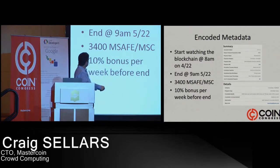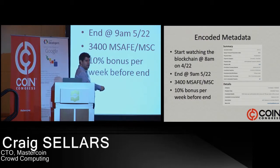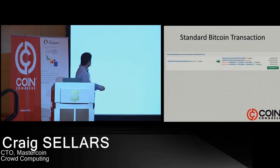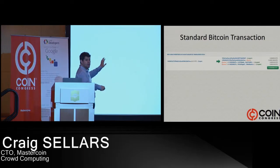What you can see here is essentially the attributes of that contract, which says start watching the blockchain at this time, stop watching it at this time, and provide a 10% bonus per week. This is part of the magic — this is a screenshot from blockchain.info.